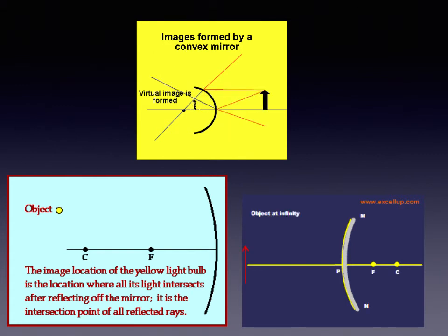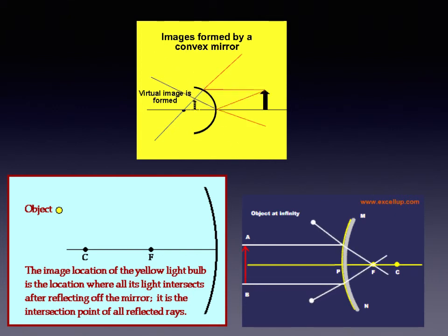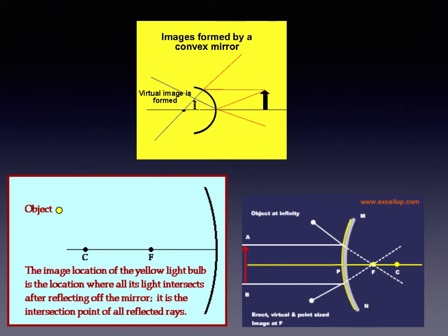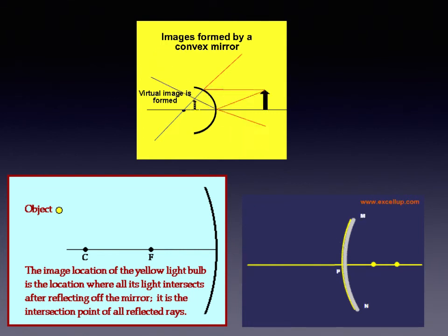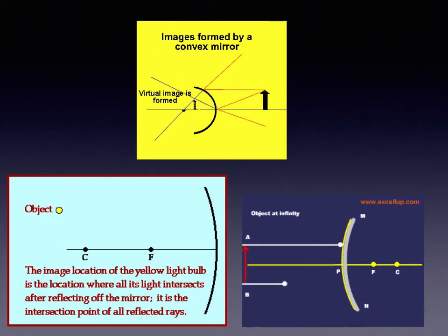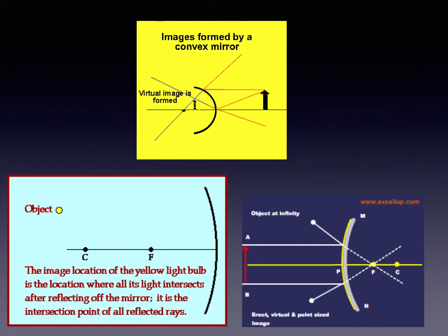When light rays collect at a point after reflection from a spherical mirror, they are said to converge. When we want to bring light rays together at a point, a converging light beam is used — doctors use such a beam to converge light on a tooth, ear, nose, etc. Equipment used in solar energy also uses converging light. When light rays spread out after reflection, light is said to have diverged. A divergent beam is used when we want light rays to spread out from a source, for example in street lamps.